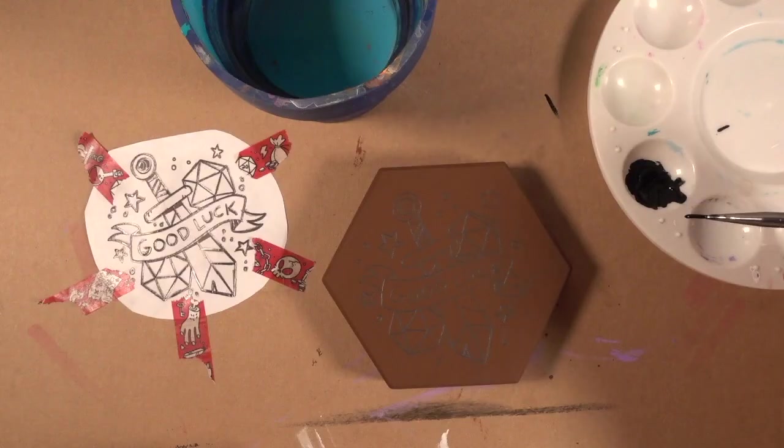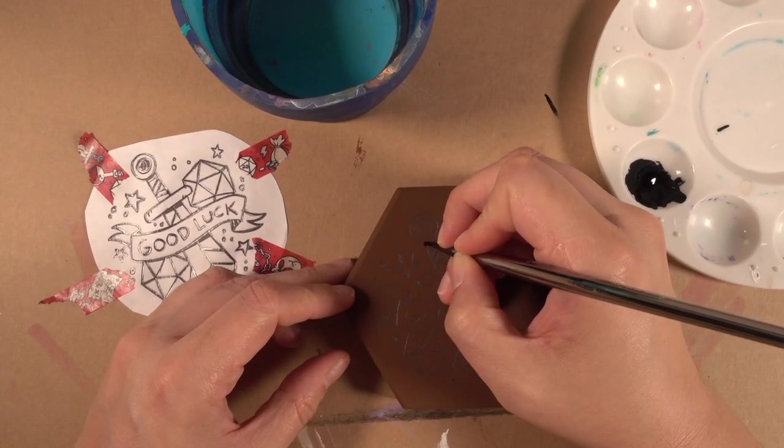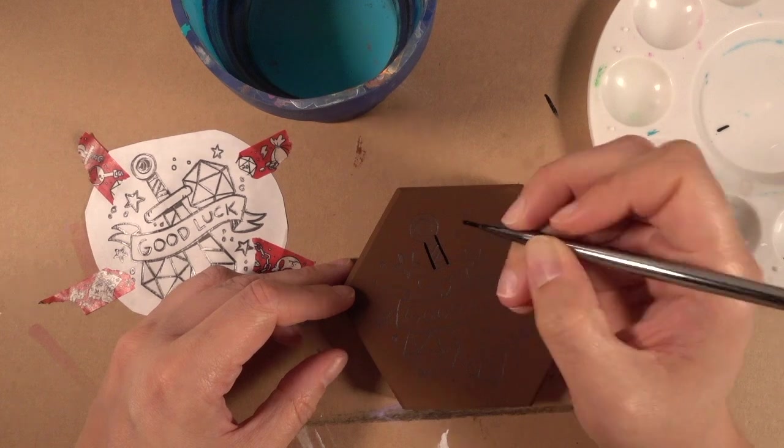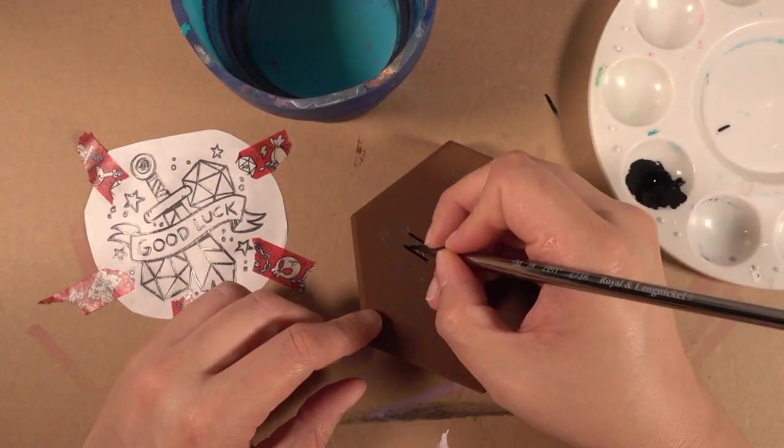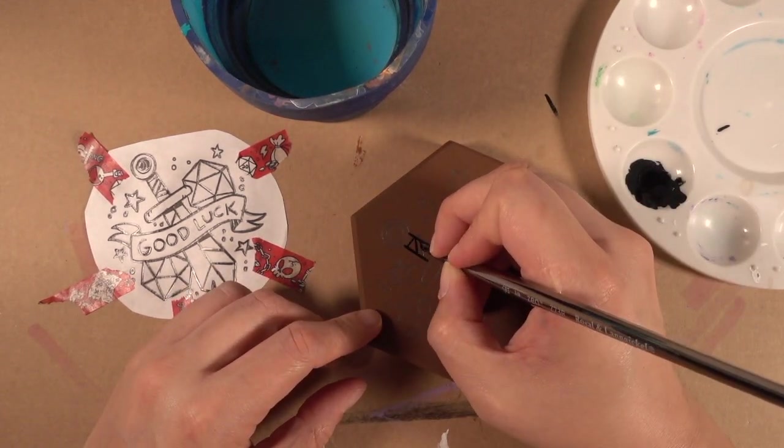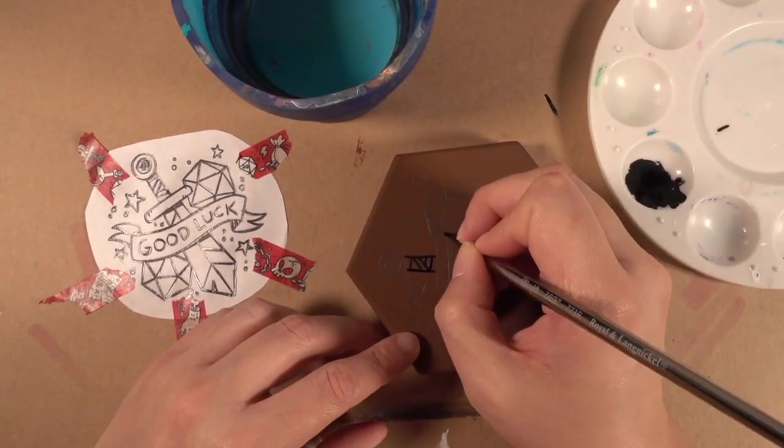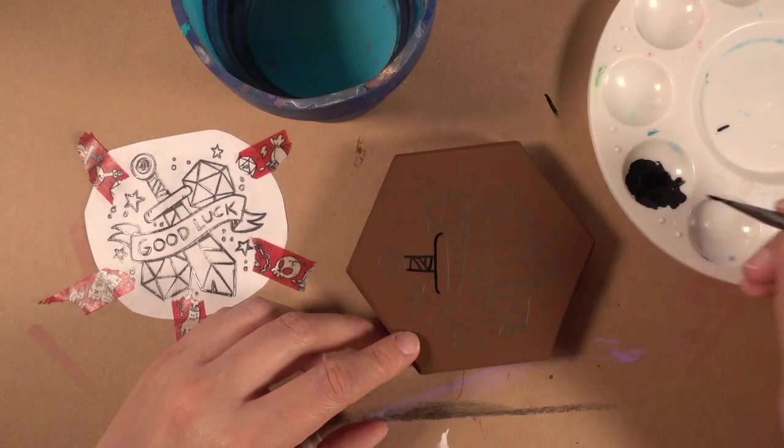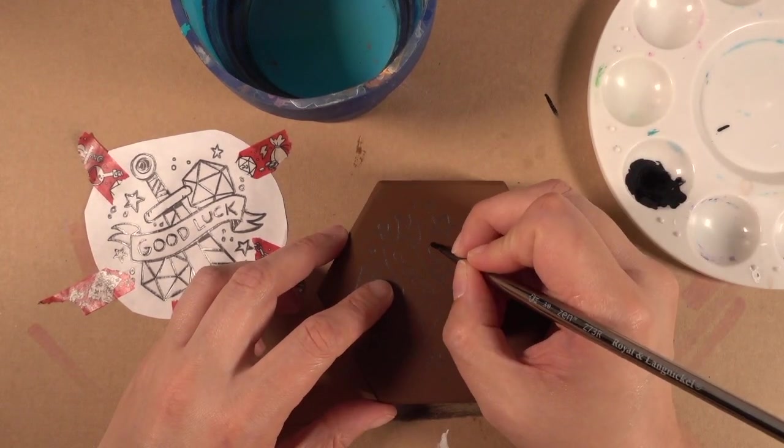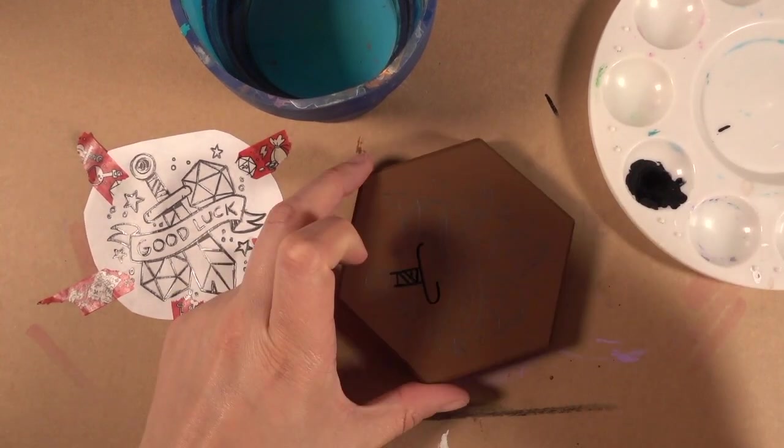Now that the design has been transferred you can paint. I use a small thin brush and black paint to make it stand out against the brown base color. This is sped up footage but just go slowly when you're painting so you get nice clean lines and don't be afraid to go back over a line if you want it to be a little darker or it's not as smooth as you want.